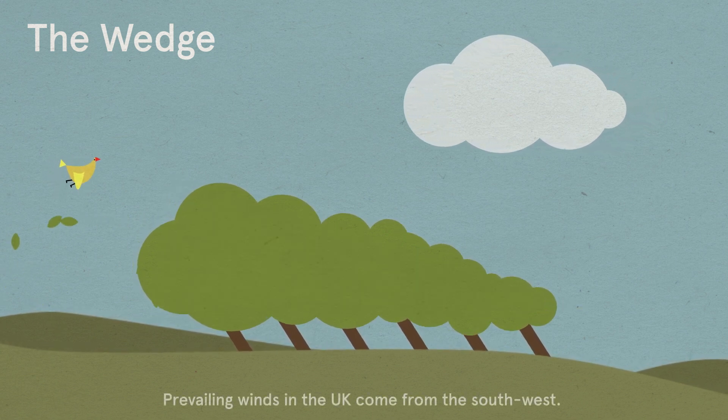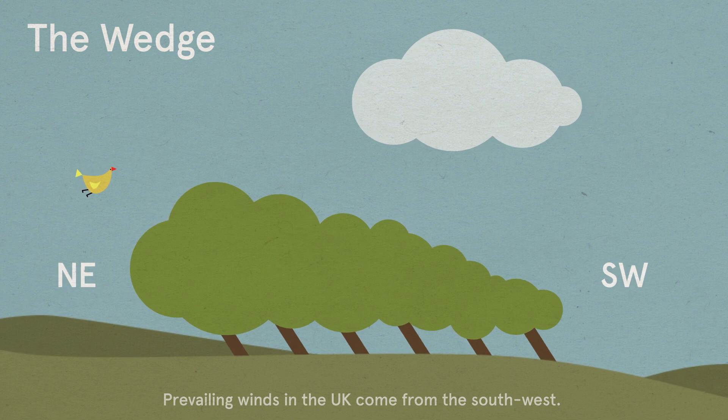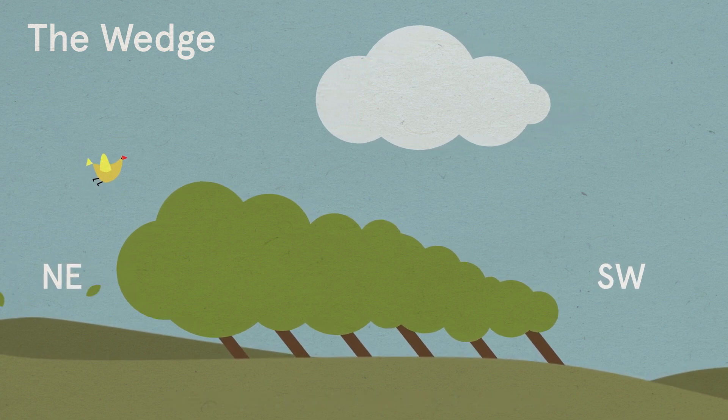If we know in advance the direction of the local prevailing winds, the wedge provides a clear arrow on the landscape and a natural indicator of direction.